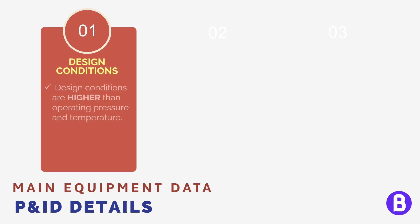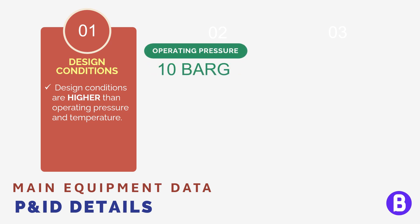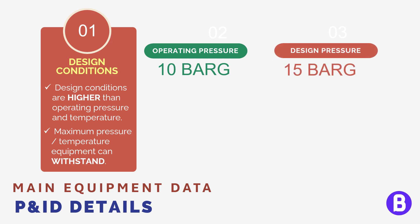Design conditions are different from operating conditions. If a vessel is expected to operate at 10 bar, then its operating pressure is 10 bar. However, if something goes wrong and the pressure rises, there is a pressure at which the vessel is mechanically designed to withstand — let's say 15 bar, for example. So the vessel design pressure is 15 bar gauge, and under any upset conditions, the pressure in the vessel shouldn't exceed 15 bar gauge; otherwise, the vessel is susceptible to failure. The P&ID shows the design conditions, unlike the PFD, which shows the operating pressure and temperature.